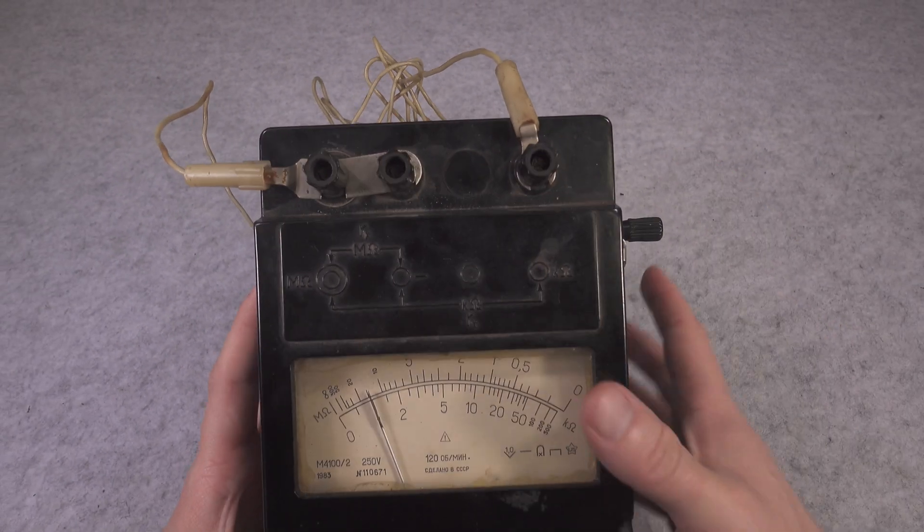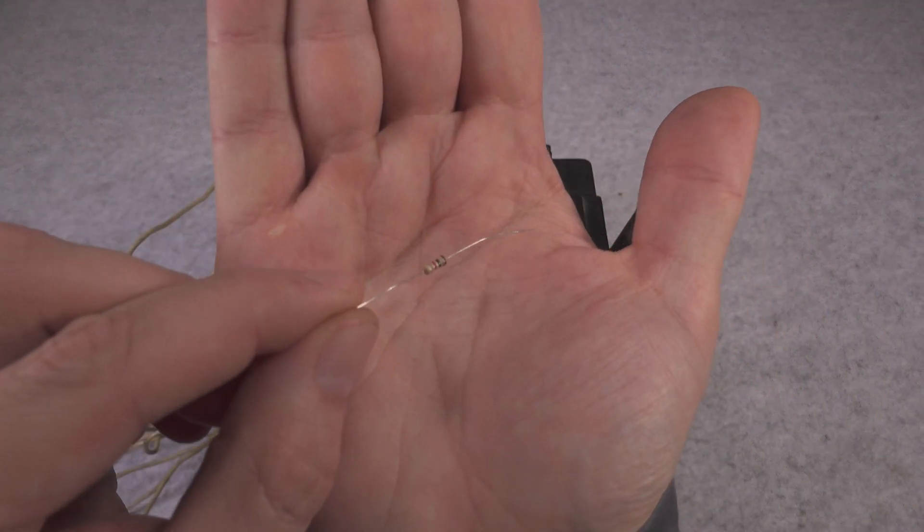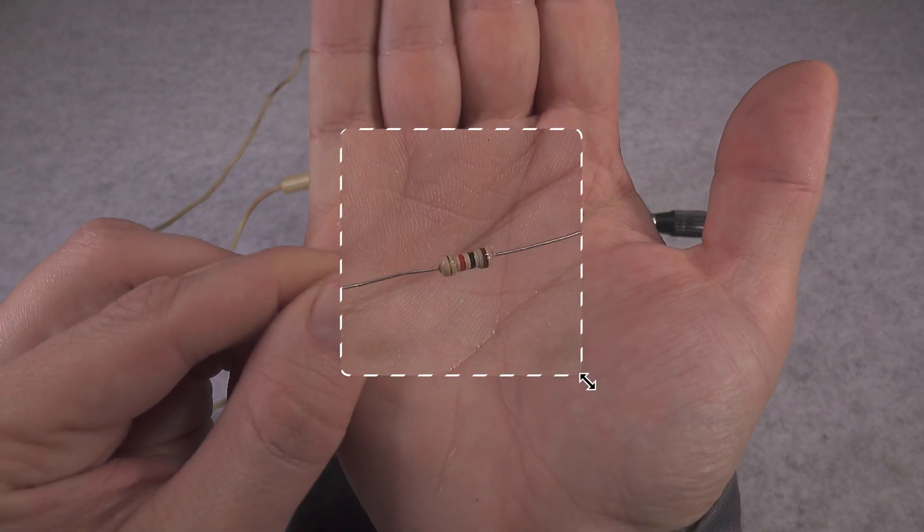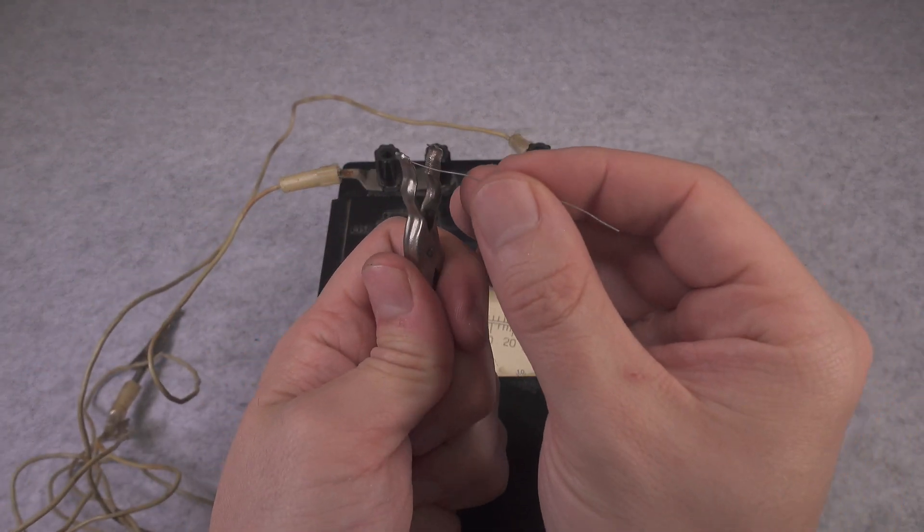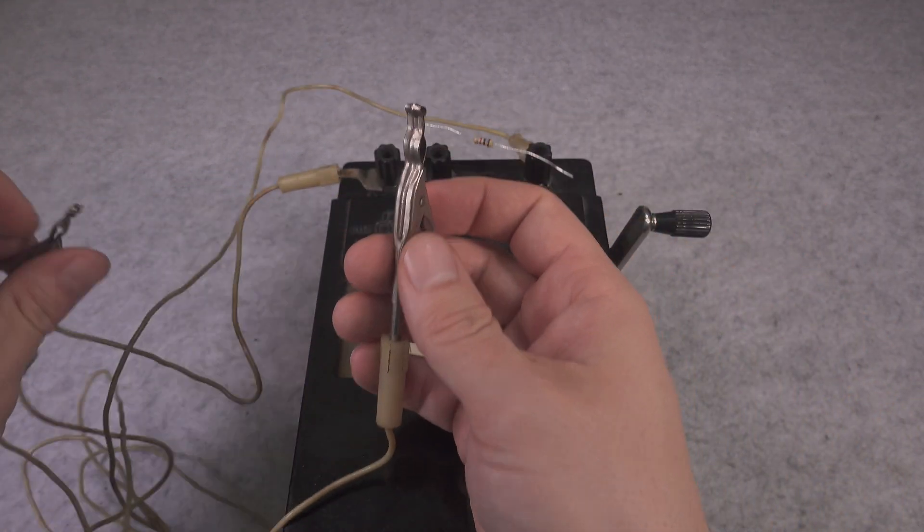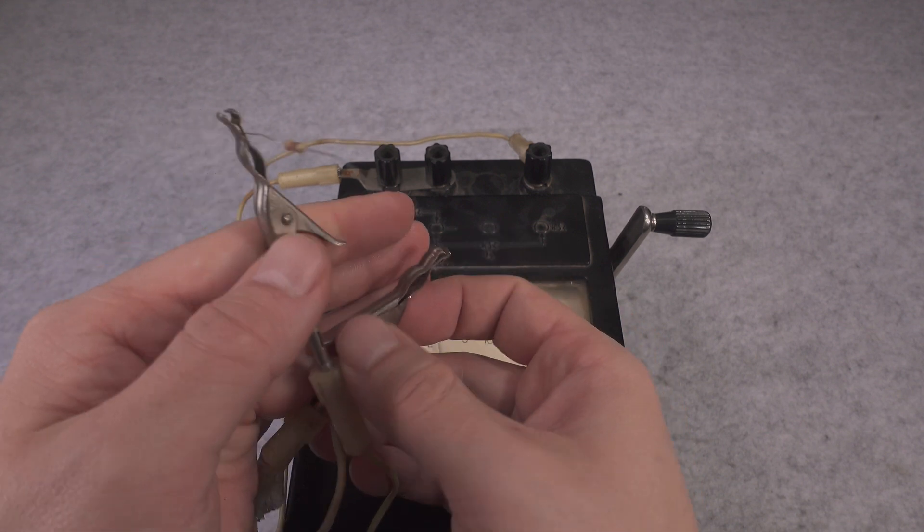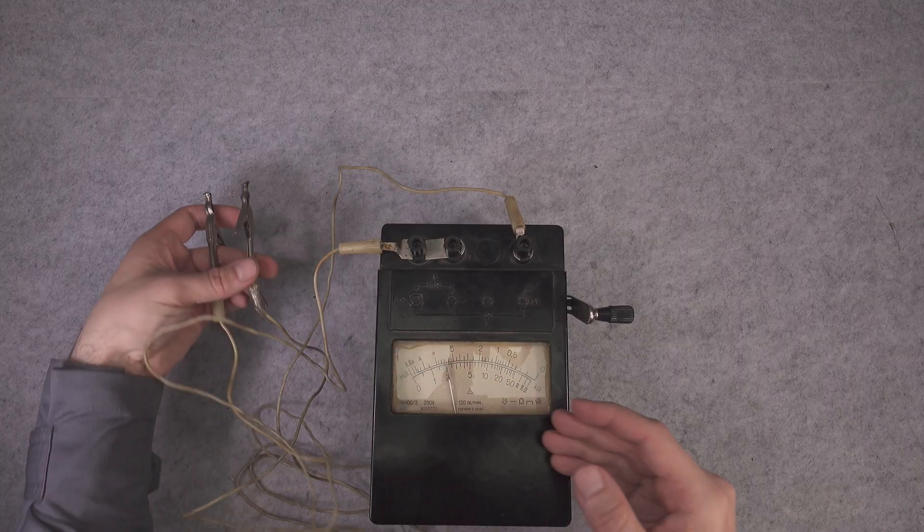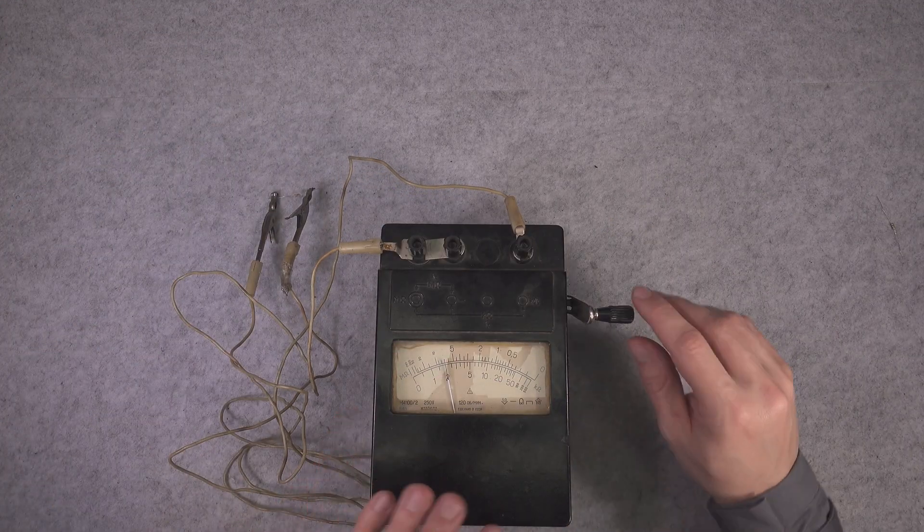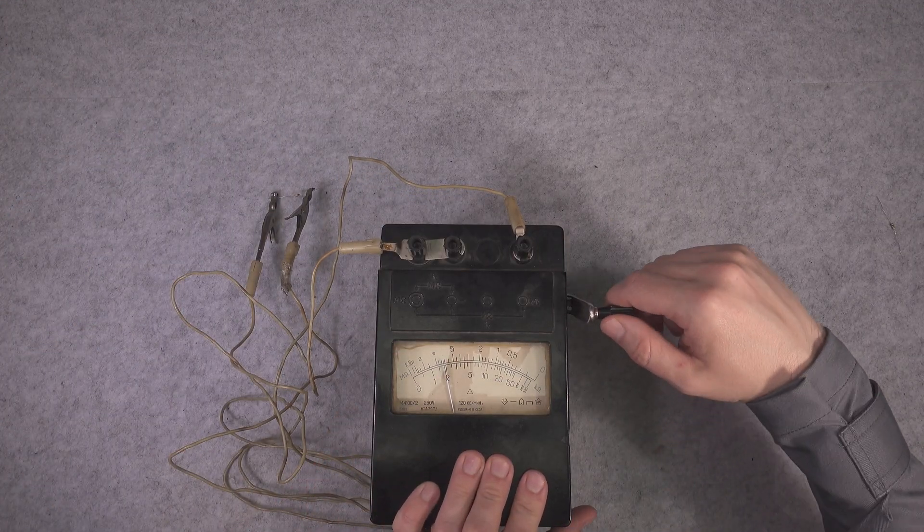And the kilo ohms is here. To test our device we are going to grab a resistor like this. It is a one kilo ohm. We're going to connect it into our test leads just like that, and we go like this.